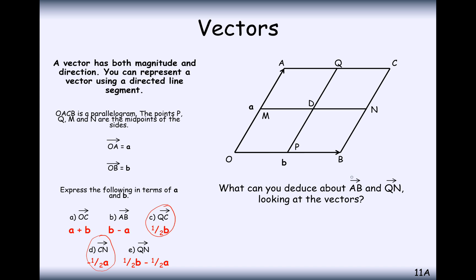What can you deduce about vector A to B and Q to N? These vectors here and this vector here. If you look at their vectors, we've got b minus a and half b minus half a. It must be the case that these two vectors are parallel because they're traveling in the same direction, just with a different magnitude. You can times one vector by the other, so hence they're parallel.